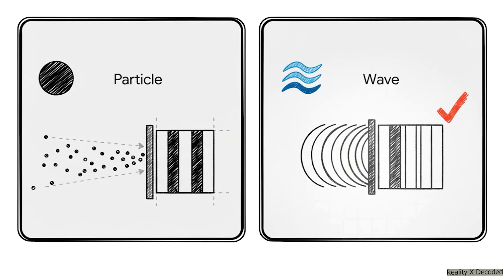Okay, so think about it. You really only have two possible outcomes here. If light is made of little particles, like tiny bullets, you'd expect to see two bright lines on the screen, right? One for each slit.